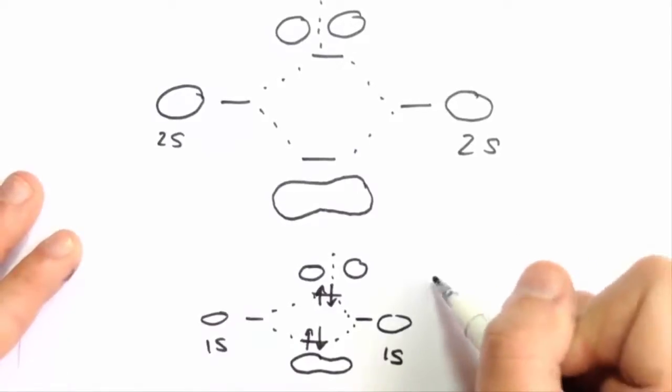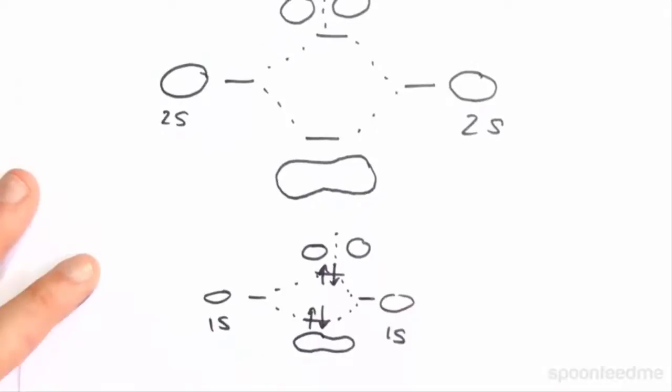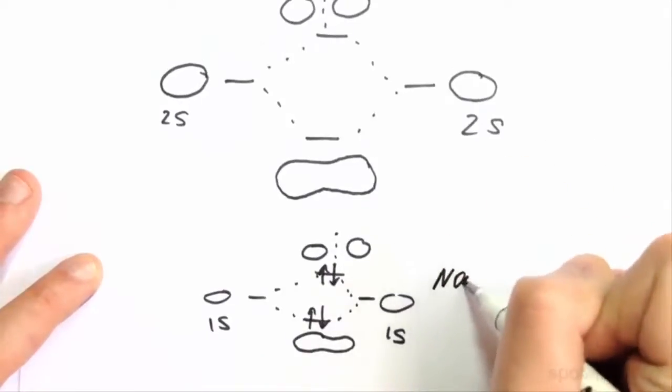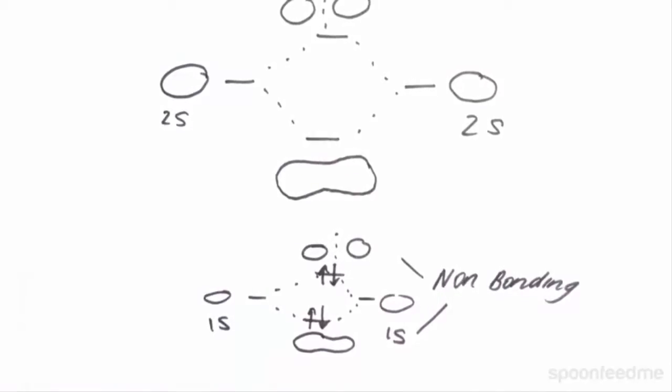Therefore, we regard these 1s molecular orbitals both as non-bonding. This here, this is all regarded as non-bonding. So we can write that down. Both of these are non-bonding. This is very important for when we later allocate bond orders. We then get the combination of our 2s orbitals, which is of higher energy. We show this by drawing it above the 1s orbitals, as we've done here.